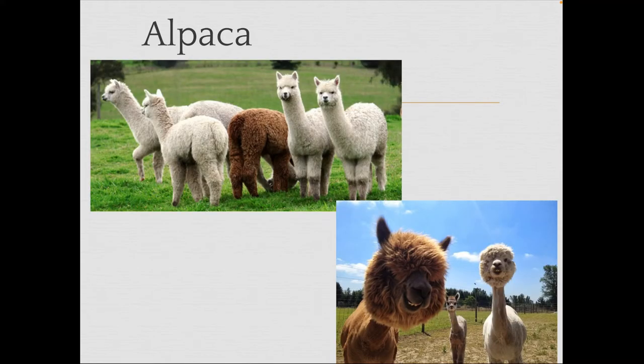Here are some adorable alpacas. In the top photo you can see what they look like before they are sheared — growing their fleece, nice and fluffy. In the bottom picture they have been sheared. A company comes in and removes all of their fleece, cleans it, and turns it into yarn or fabric. It can be bleached to remove the color and then dyed different colors to make gloves, hats, sweaters, socks, and all different types of products.